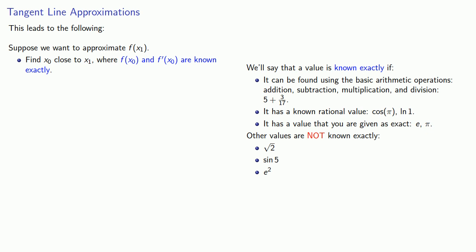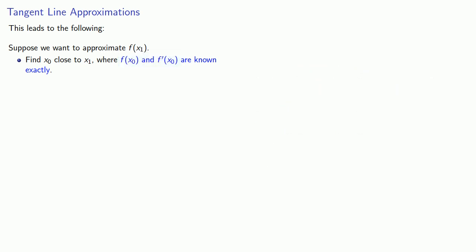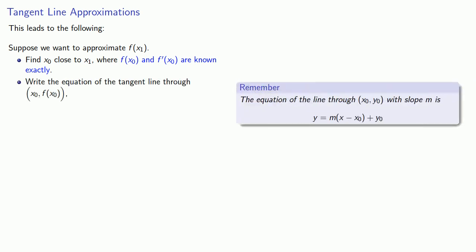Next, because we carefully chose x0 so that we knew the function value and the derivative, then we know the point of tangency and we know the slope of the tangent line. Now we can write the equation of the tangent line through the point of tangency, and then use the y value of the tangent line at x1 to approximate the value of the function at x1.